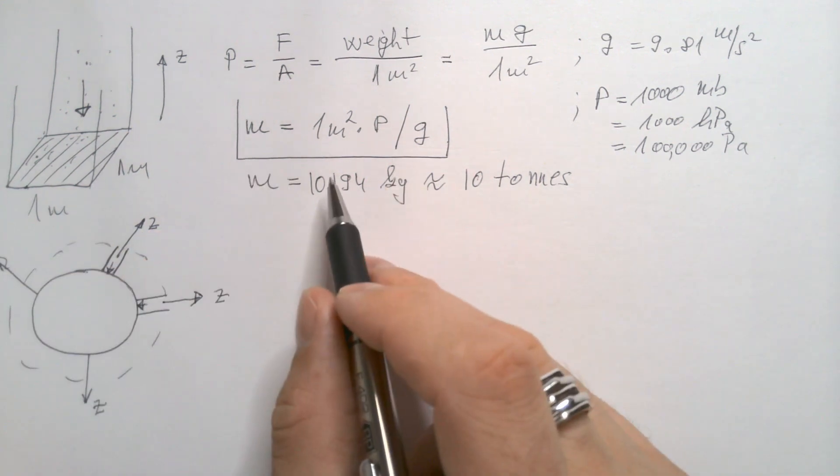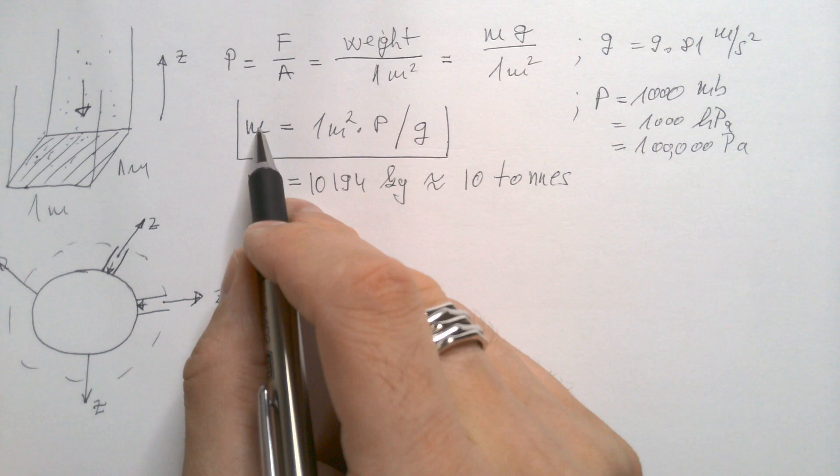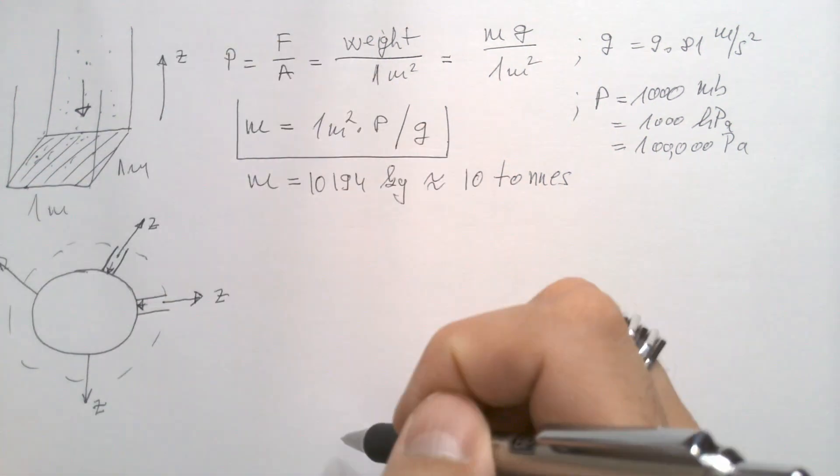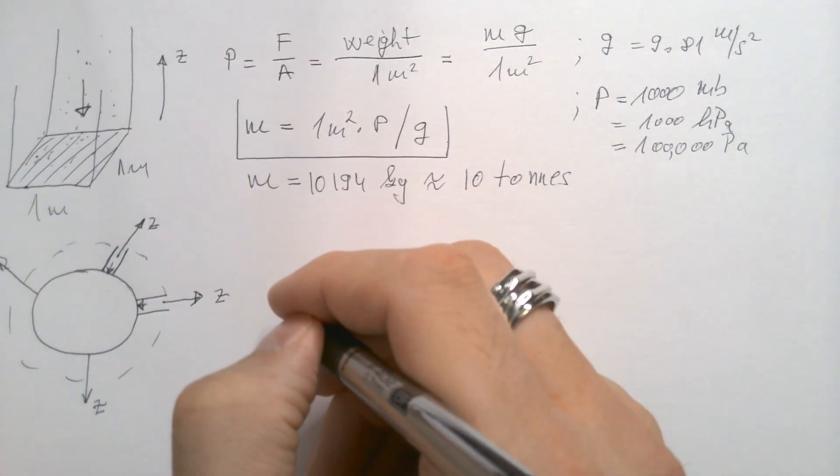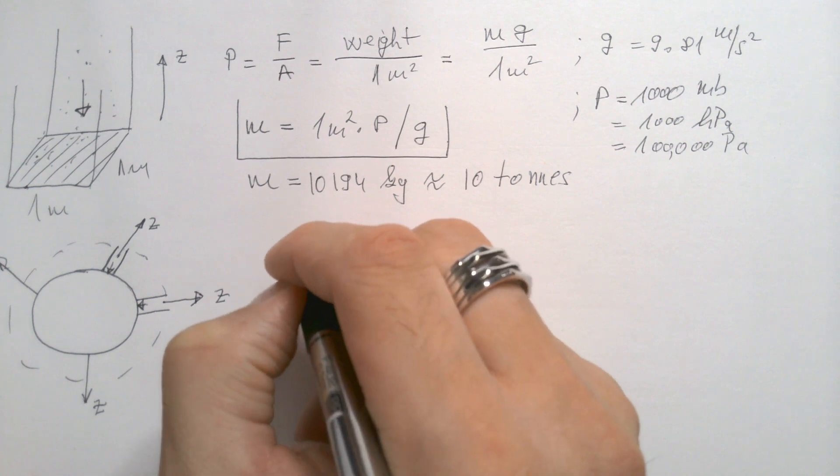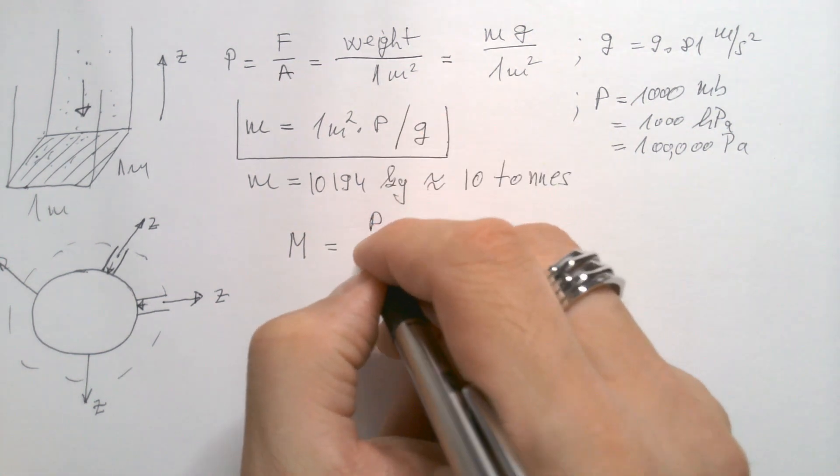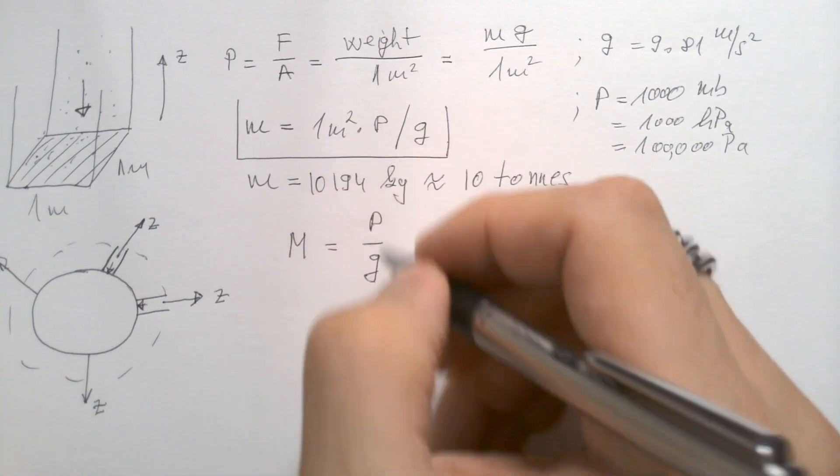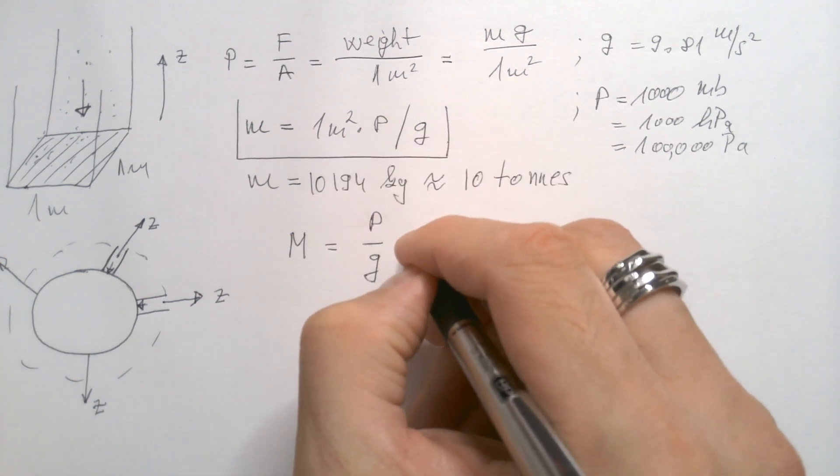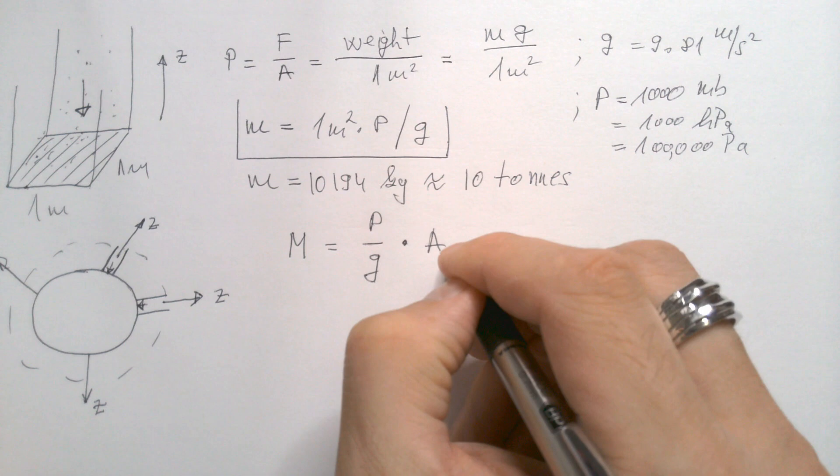So we generalize this result. We say if this was mass per square meter of a column, then mass of the atmosphere will be this result p over g, which was the result per square meter times area of the planet Earth.